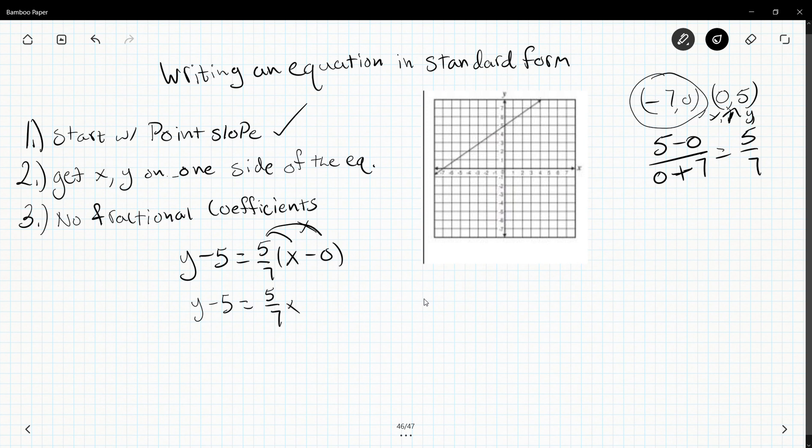Now I need to move x and y to the left side of the equation. To move this x over, I need to subtract 5/7 x from both sides.